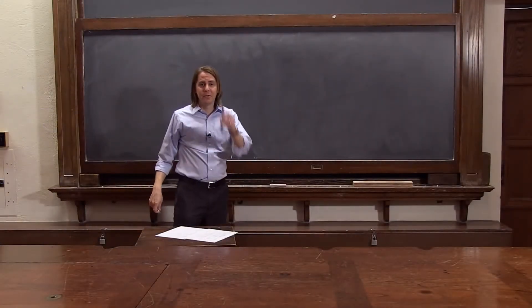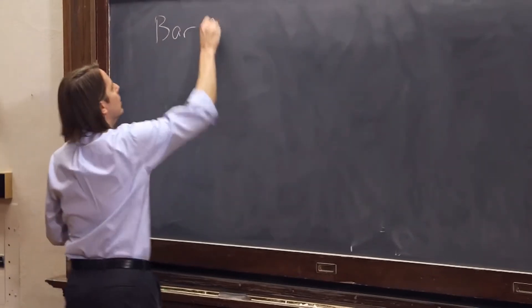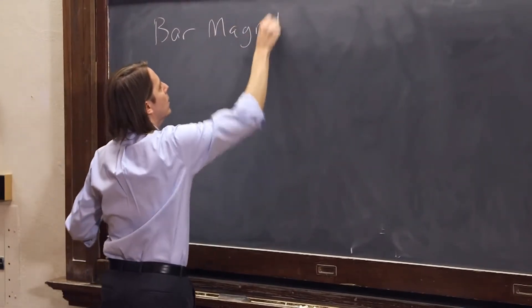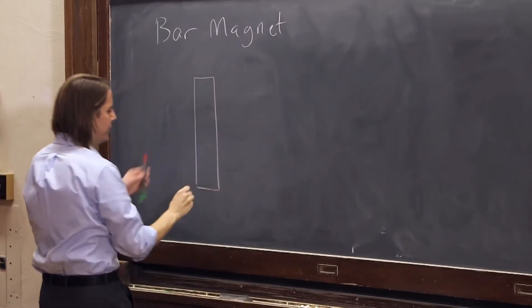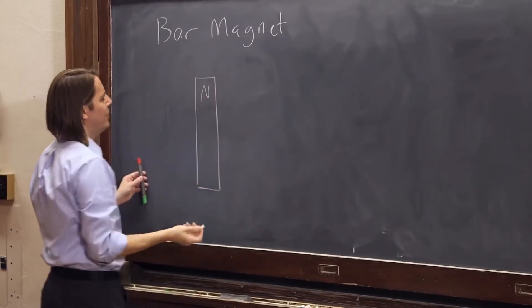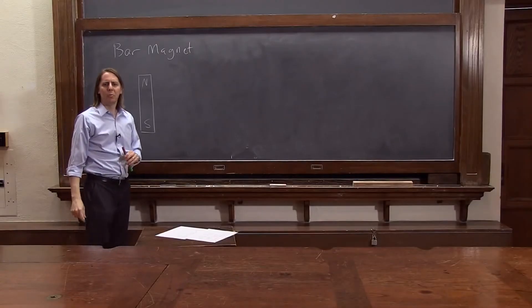The way we normally introduce magnetic fields is with a bar magnet. Usually you draw it as a rectangle, although it's usually a cylinder in three dimensions, and we put an N up here and an S down there. That's the north pole and the south pole.